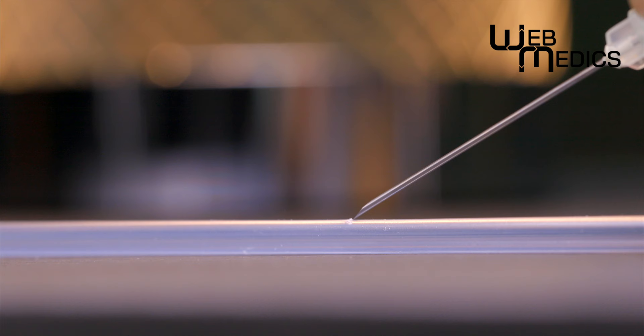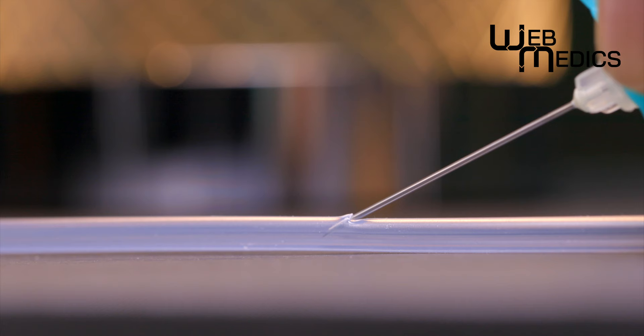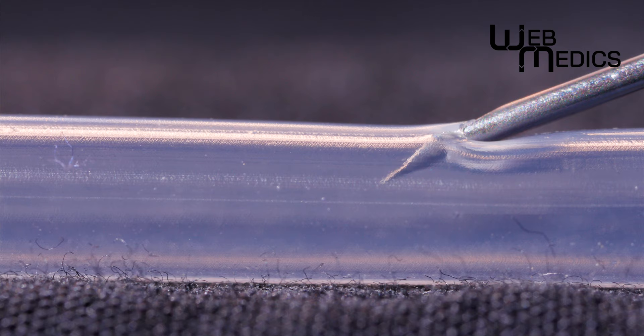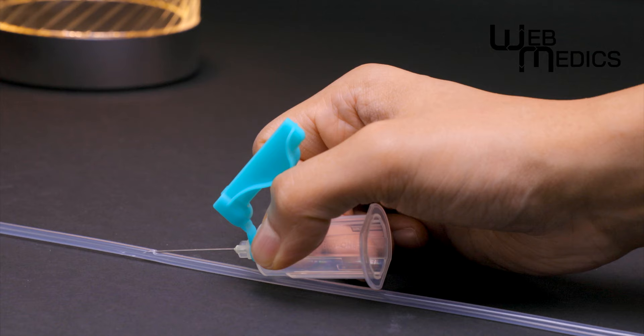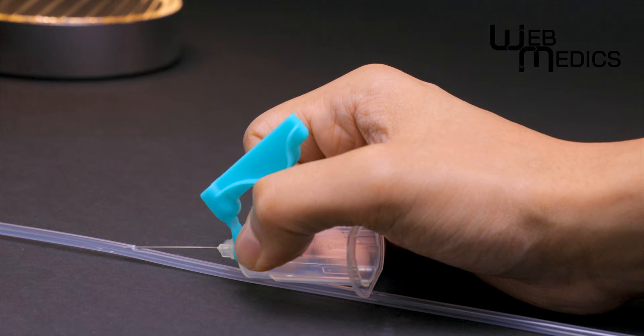As for maneuver, we need to advance two millimeters or a sixteenth of an inch after flashback. This ensures we are fully in the vein. Then we can flatten the angle and advance further. Finally, we should anchor the needle in its final position as we withdraw our syringe plunger or connect our bottles.